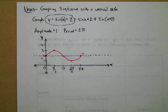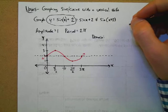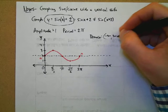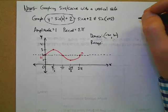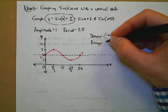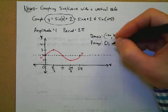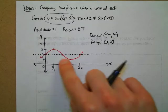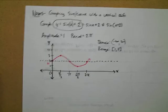What is the domain for this graph? The graph goes left to negative infinity and right to positive infinity — all real numbers. What's the range? The lowest y value this graph hits is one, and the highest is three. So the range is from one to three — it just keeps oscillating back and forth. There's our vertical transformation: shifted up two.